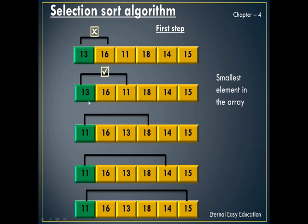11 is smaller than 13, so there is a swap. 11 is placed in the first position and 13 is moved to the second position. Again the first element is compared with the next element. 11 is less than 18, so no swapping. Again 11 is compared with the next element — 11 is smaller than 14, so no swapping.